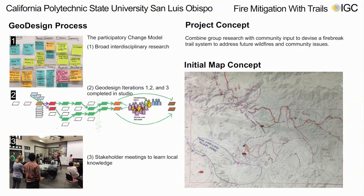Our geodesign process is the same as described in the book — we do three iterations through studio. Our studio was an interdisciplinary studio with landscape architecture and architecture students. After finishing those iterations, we held a series of stakeholder workshops with public entities in Mariposa County, the U.S. Forest Service, and Cal Fire departments in the area. We got to learn local knowledge we wouldn't have otherwise obtained. Our initial map concept was actually drawn with members of the community — we didn't just go in and try to tell them what they needed; we wanted to do it with them.